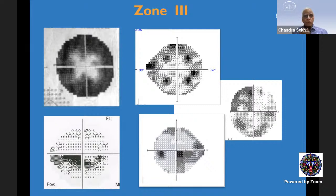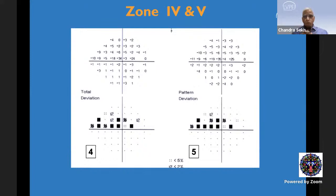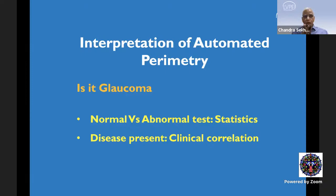Moving on to zone 3, you look at the grayscale and the type of field defect, which you can use to explain to the patient. Zone 4 and zone 5 — the total and pattern deviation numeric plots as well as probability plots — is the goldmine. That is what we've invested our money for and where we decide whether the patient has glaucoma or not. To do that, we need to understand what is normal versus abnormal, which is a statistical concept, and what is abnormal versus disease, which is a clinical concept.